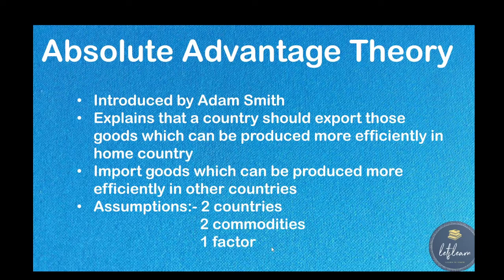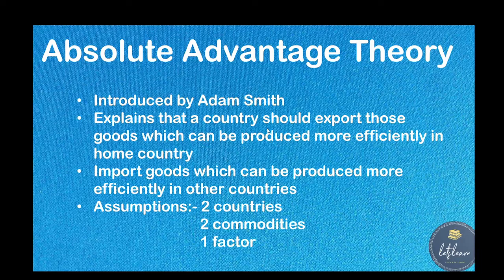The next theory is absolute advantage theory, given by Adam Smith. He explains that a country should export those goods which can be produced more efficiently in the home country, and import the goods which can be produced more efficiently in other countries. For example, if a country is very efficient in producing wheat, it should produce more wheat and export it. If it is not efficient in producing sugar, it should import sugar instead.